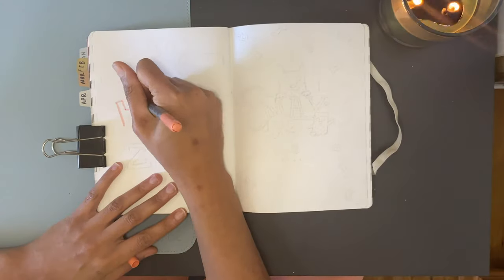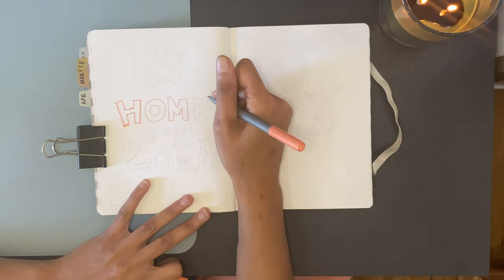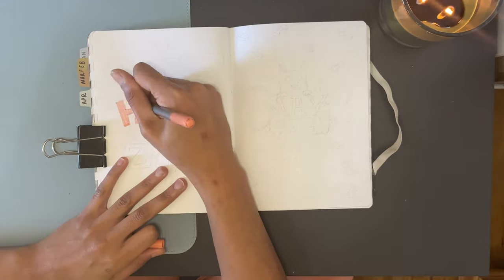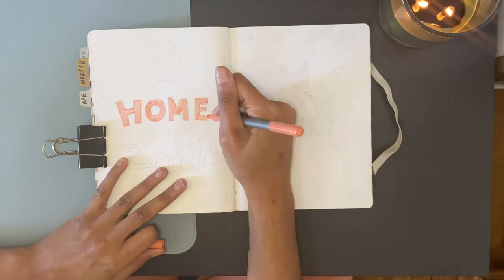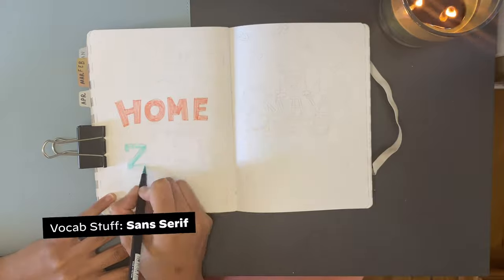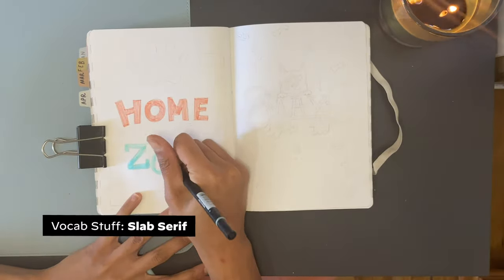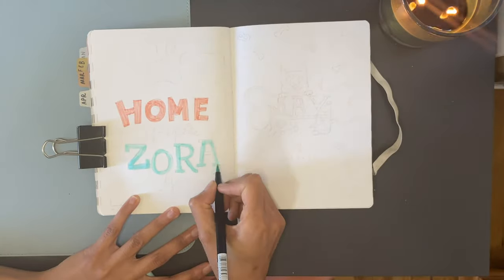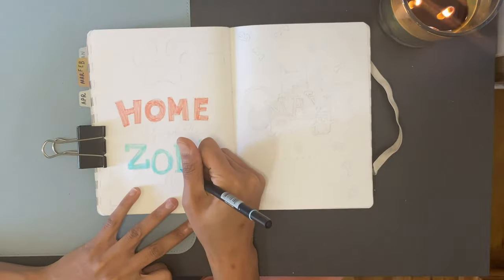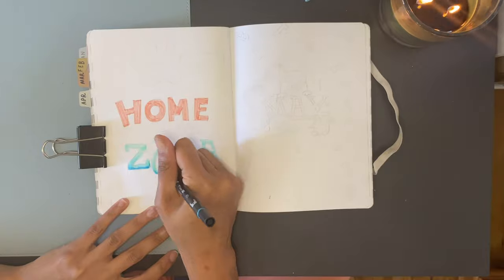For the title spread, I'm doing a quote page, a little play on home is where the heart is. Instead I'm going with home is where Zora is. I'm using a mix of fonts: a chunky block letter or sans serif for the word home, a slab serif for the word Zora, and then just a good old hand letter script for the rest. As far as the color scheme, I'm pretty much sticking with the colors of Zora's toys so everything looks a bit more cohesive.